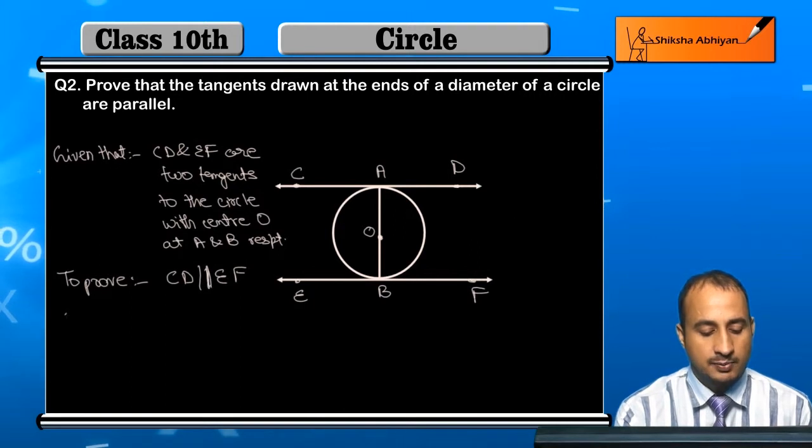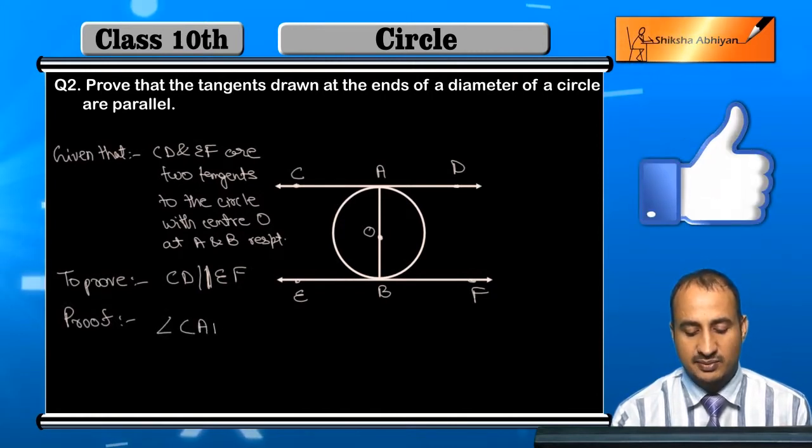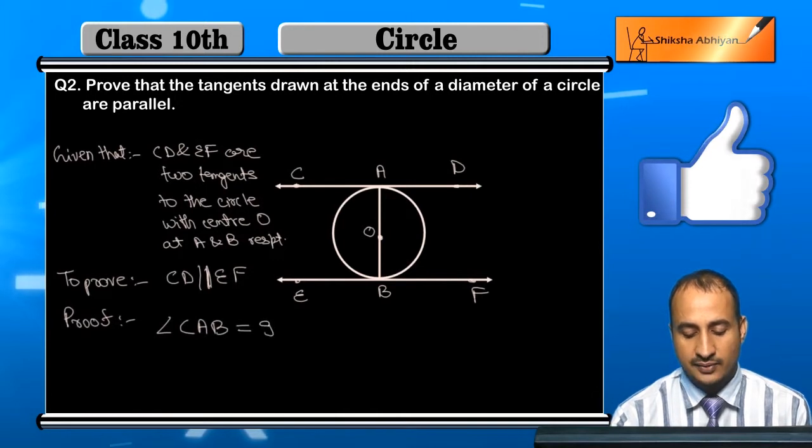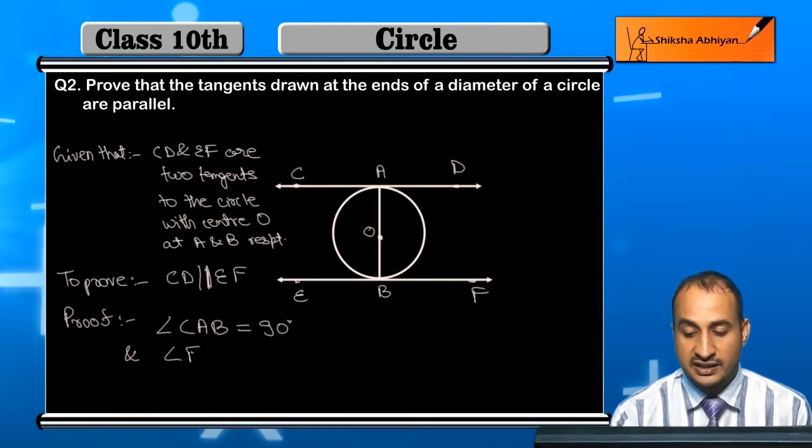Now see the proof. Here we have to prove that angle CAB equals 90 degrees and angle FBA equals 90 degrees. Why?